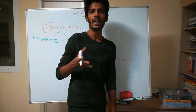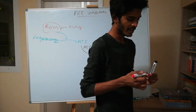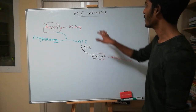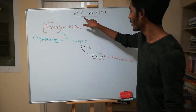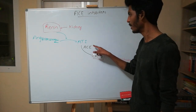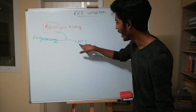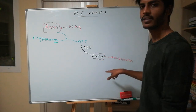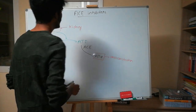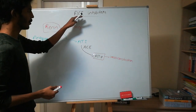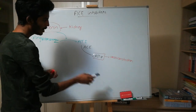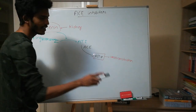Angiotensin two causes vasoconstriction, which will elevate blood pressure. Angiotensin converting enzyme inhibitors are drugs which inhibit the angiotensin converting enzyme and prevent the conversion of angiotensin one to angiotensin two. This is the simple mechanism of ACE inhibitors.